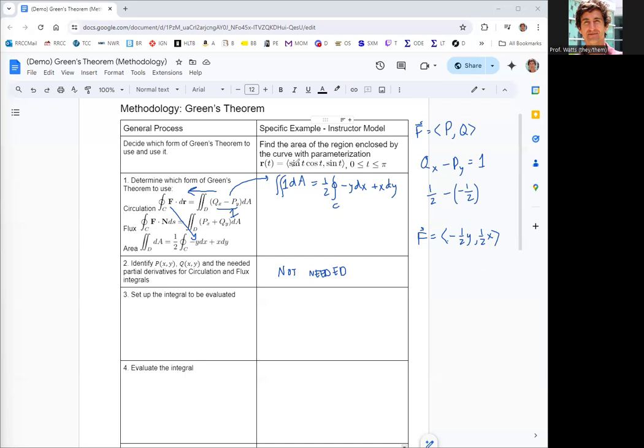Now we're going to set this integral up and evaluate it. You remember that x is given by the first component function of parameterization, and y is given by the second component function of the parameterization. Then go ahead and find your differentials. So if x is sine t cosine t, then dx is cosine squared minus sine squared, and dy is cosine.